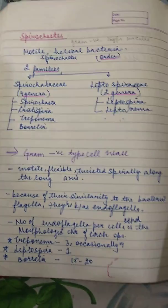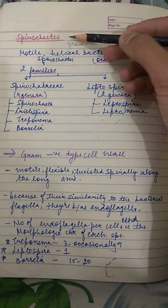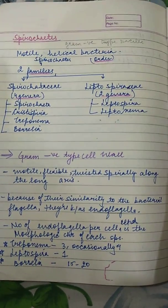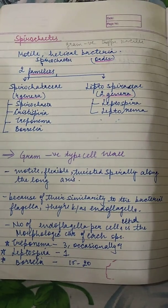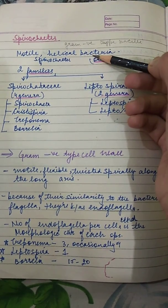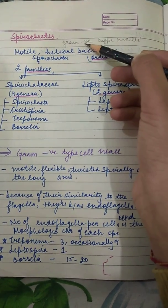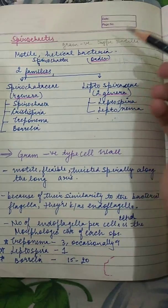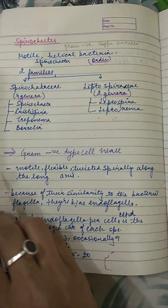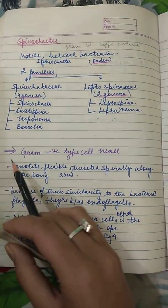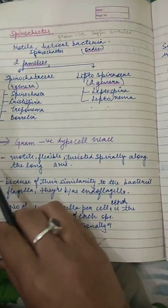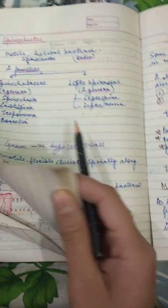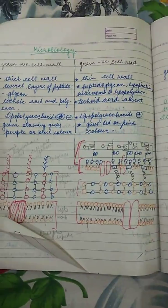Hello guys, today we study about spirochetes. They are microorganisms — motile, helical bacteria of the gram-negative type bacilli. I hope you remember the difference between gram-positive and gram-negative bacilli; if not, I'll give you a quick revision.